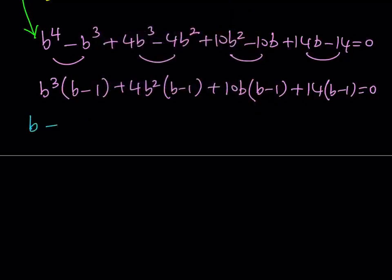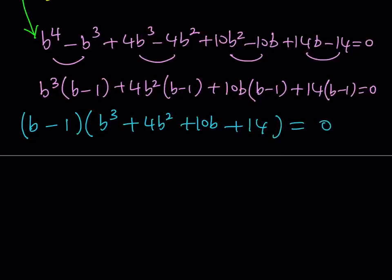So let's go ahead and factor out B minus 1 so that we can get our cubic and our cubic is going to look like this. B cubed plus 4B squared plus 10B plus 14 is equal to 0. Now we got rid of the linear factor at least. We know that B equals 1 but the other is cubic. So how do you solve a cubic equation?